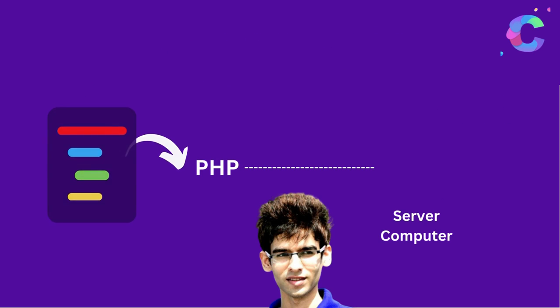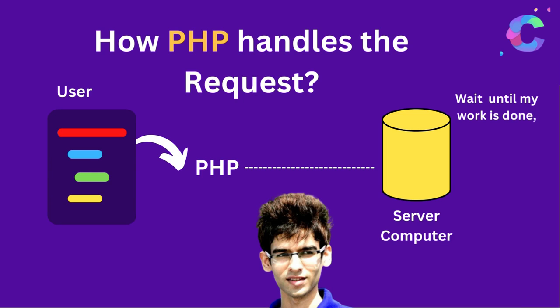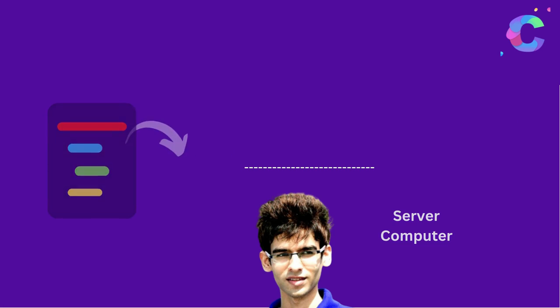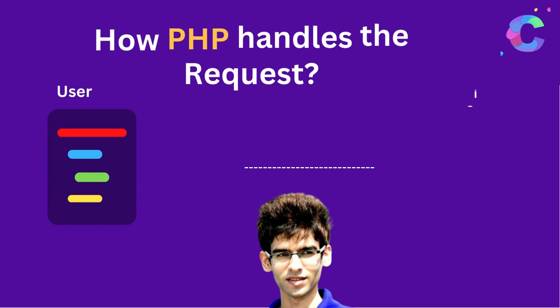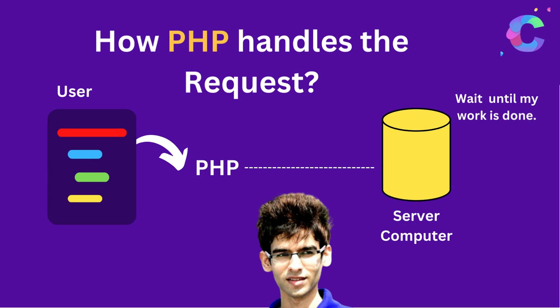Let's see how PHP handles requests. A user requests some content from PHP. PHP sends it to the server computer, which opens the request, sees what the user is requesting, fetches that content, and sends it back to PHP, which then sends it to the client. When PHP goes to the computer to handle a request, the server computer has to wait until that request is fully served to the client user.